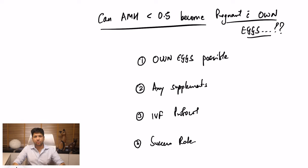Hi everyone, Dr. Jay Mehta here from Mumbai. Aaj ka video ka ek case discussion jo hai, yeh bahut important hai. The question is, can a lady jiska AMH ka value 0.5 se kam hai, can they become pregnant with their own eggs? Kya woh khud ke egg se maa ban sakte hai ya nahi?